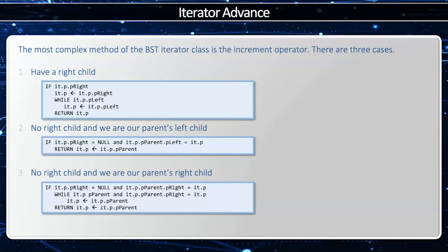One of the most complicated operations is how to advance the iterator. This is done through the plus-plus operator. There are three cases. First, if we have a right child, then we advance to the right child and then go as far left as we can. As long as we have another left node, we keep going that way. Another way to look at this is: we go right and then jig left.